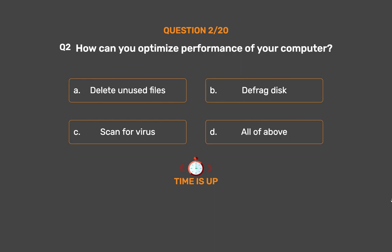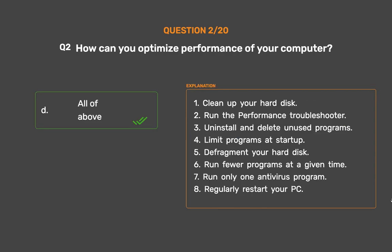The correct answer is Option D: All of the above. Methods include: 1. Clean up your hard disk. 2. Run the performance troubleshooter. 3. Uninstall and delete unused programs. 4. Limit programs at startup. 5. Defragment your hard disk. 6. Run fewer programs at a given time. 7. Run only one antivirus program. 8. Regularly restart your PC.